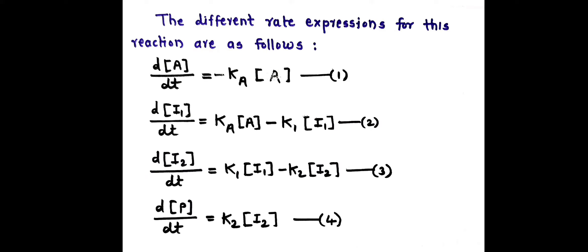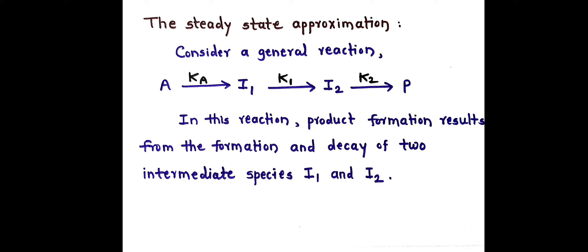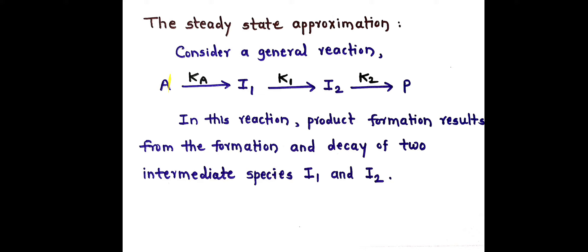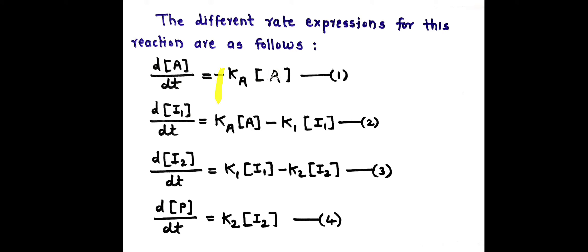The different rate expressions for this reaction are as follows. The first rate expression is dA/dt = -Ka[A]. Here in the first reaction, A undergoes decay to form I1 and Ka is the rate constant. As A undergoes decay, therefore here comes minus Ka into concentration of A. This is the first equation.